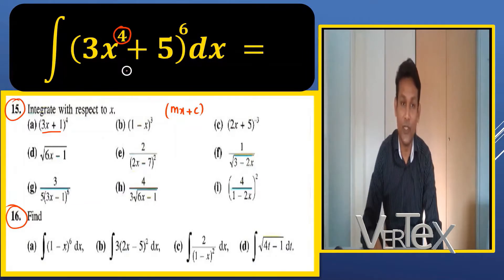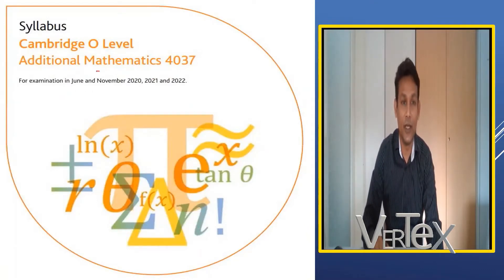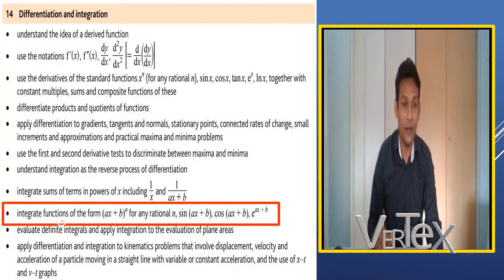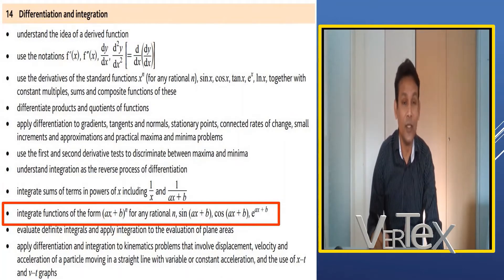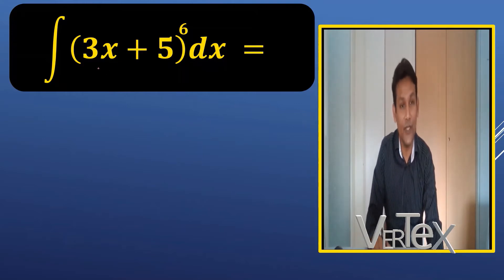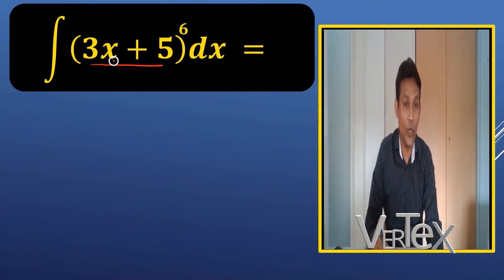It is very important to know whether we have this type of integration in our syllabus. Looking at the Cambridge Additional Maths 4037 O-Levels 2020 syllabus, the requirement is to integrate functions of the form (ax plus b) to the power n. You cannot have ax to the power of something inside the bracket — the power of x must always be one. So this form is not required at O-Level 4037. In our syllabus, we always have the mx plus c form inside the bracket, where x cannot have a power more than one.